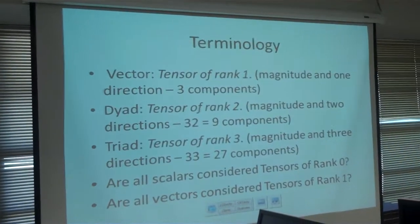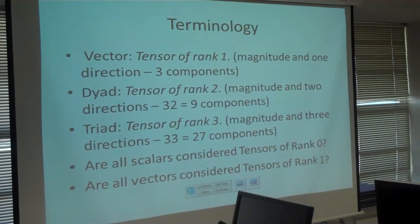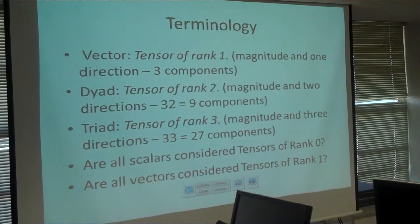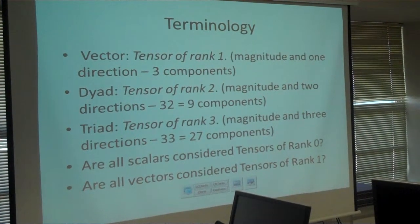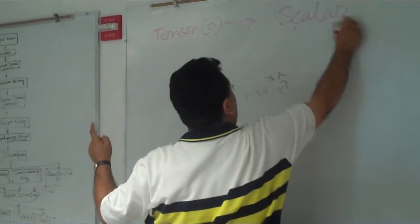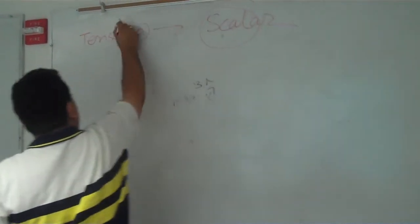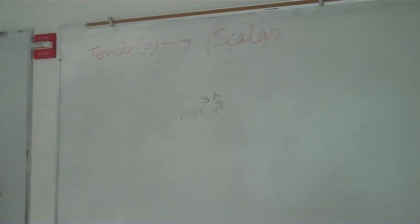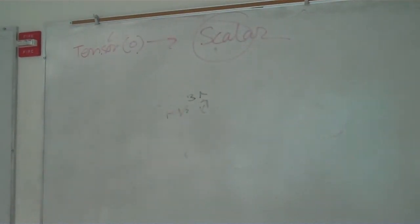My question is, if tensor of rank 0 it is a scalar, that's for sure. But do all scalars are tensors? Like with the previous example, is it the magnitude? I mean in that particular direction or what does it actually imply?